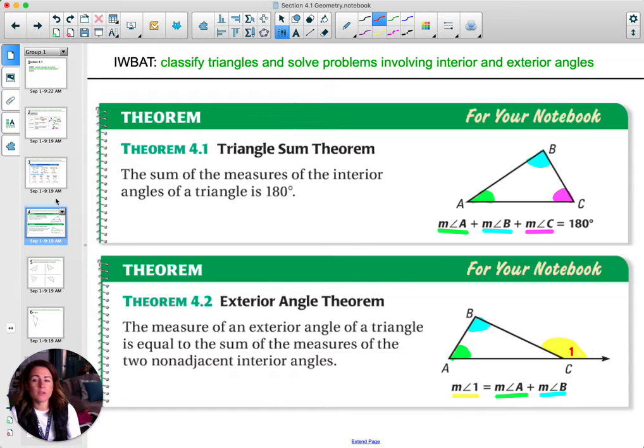We're going to get into dealing with the interior and exterior angles. So here's a couple of theorems about them that you probably remember from middle school. The sum of the measure of the interior angles is 180. So that means if you take all of these interior angles and you add them up, they will equal 180 degrees. You've got to have all three angles, not two of them. All three of them total 180.